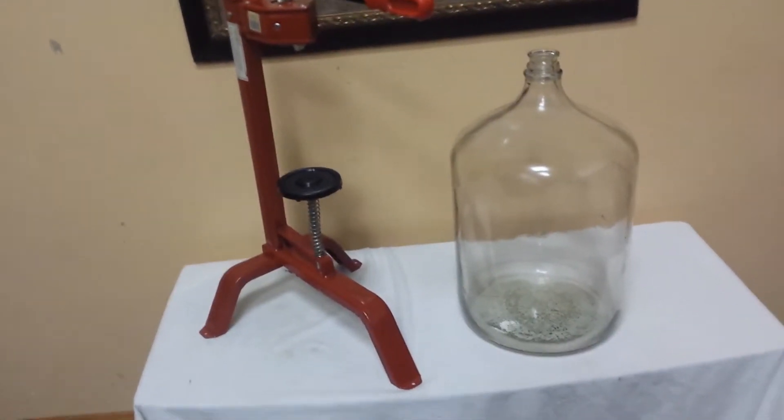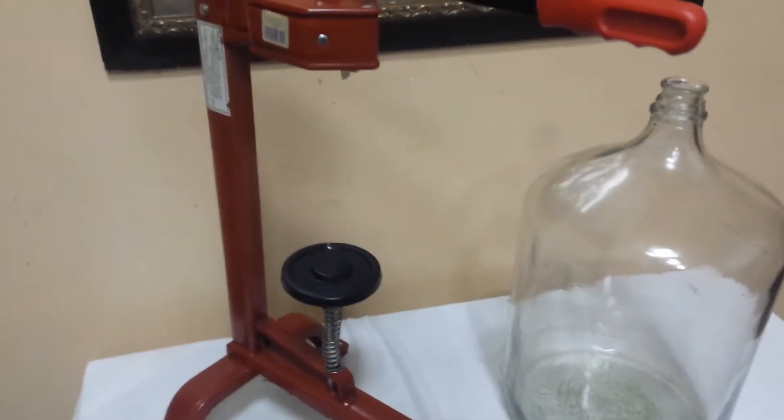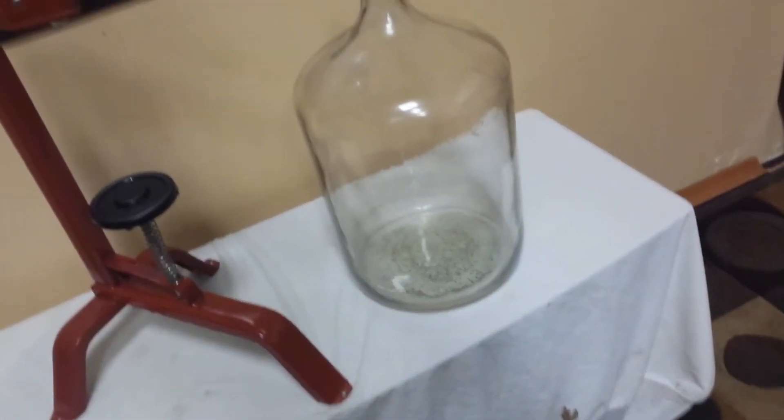So here we go, my automatic wine capper. It works - stick your bottle there, put in the cap, and it caps your wine. You've been to the winemaking place, they probably got one. Now you can have your own for cheap. And one large fermenting bottle.